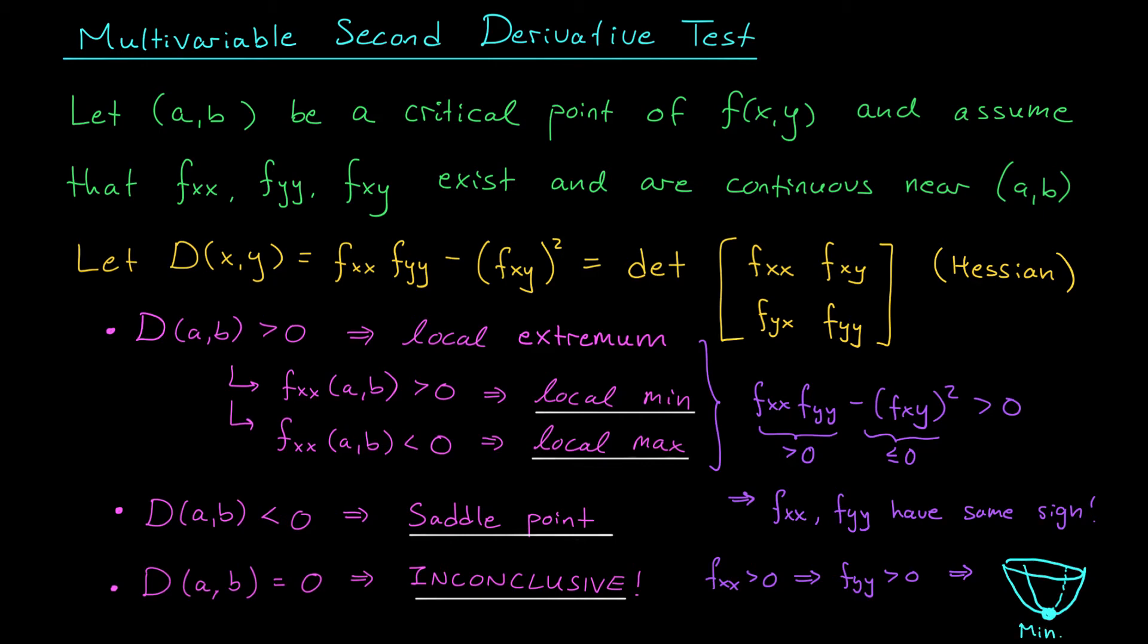If instead fxx was negative, then so too would be fyy. Our function would be concave down in both of these directions, and instead of a bowl, we would have a dome. That dome would have a local maximum.